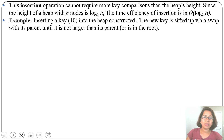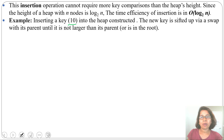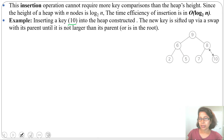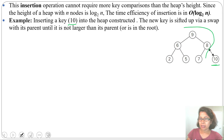Let's discuss an example — we'll insert key 10 into an already constructed heap. The new key will be shifted up via swaps with its parent until it is not larger than its parent or reaches the root. Here is the existing heap, and we want to insert 10 at the last position.